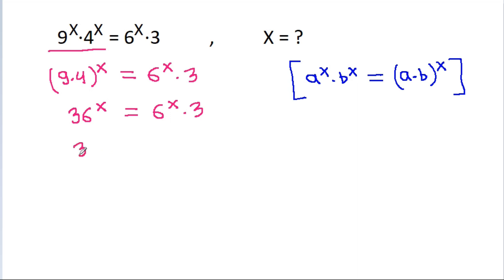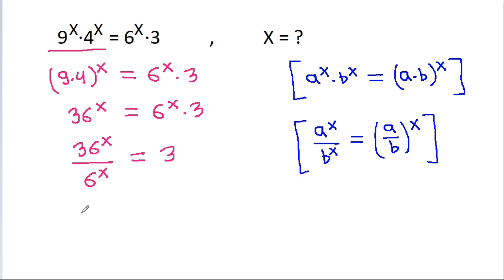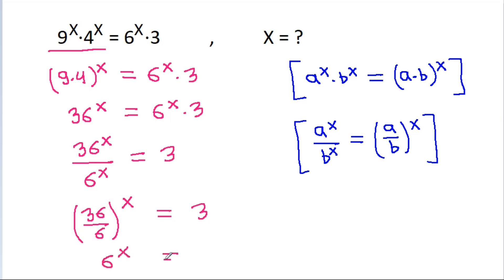So 36 power x divided by 6 power x will be equal to 3. Using the rule a power x divided by b power x equals (a divided by b) power x, this gives us (36 divided by 6) power x equals 3, so 6 power x equals 3.